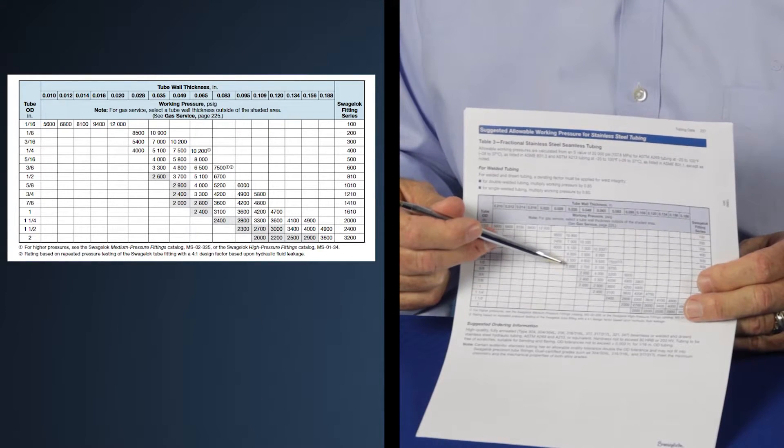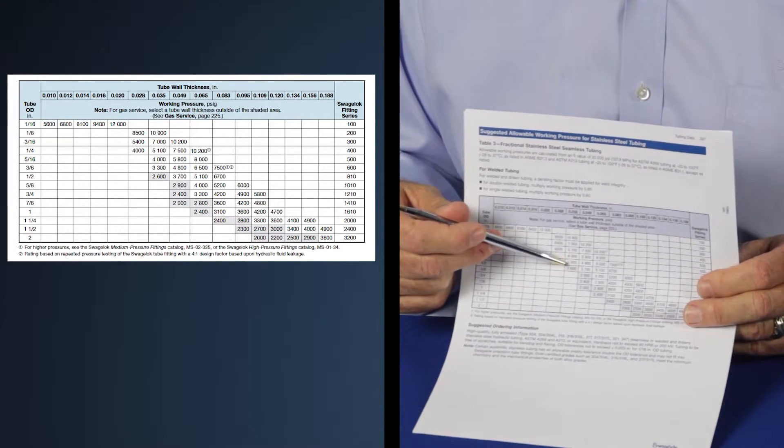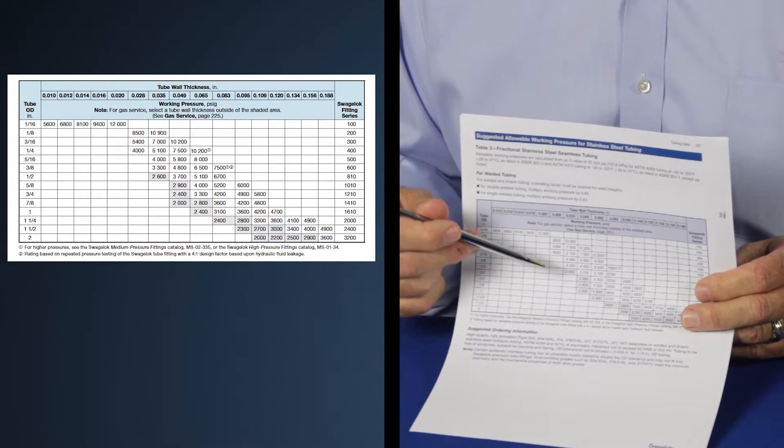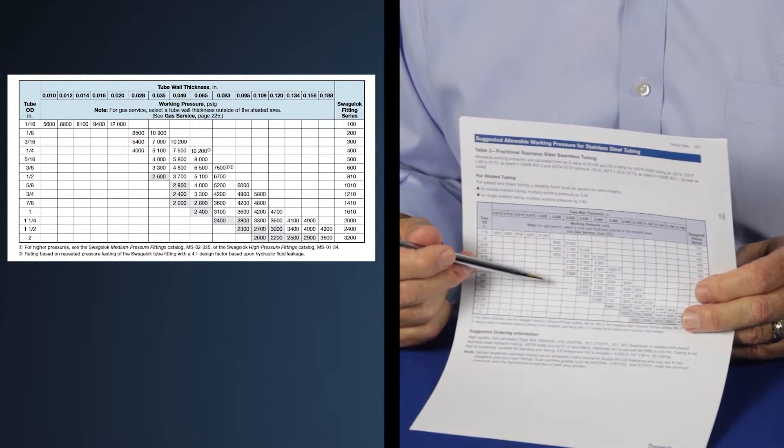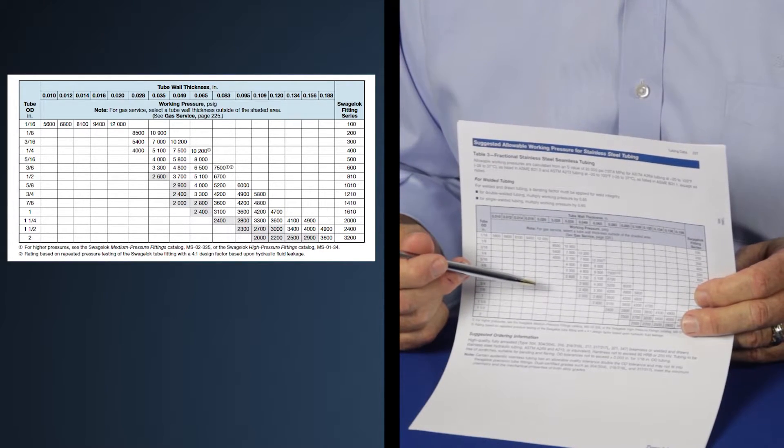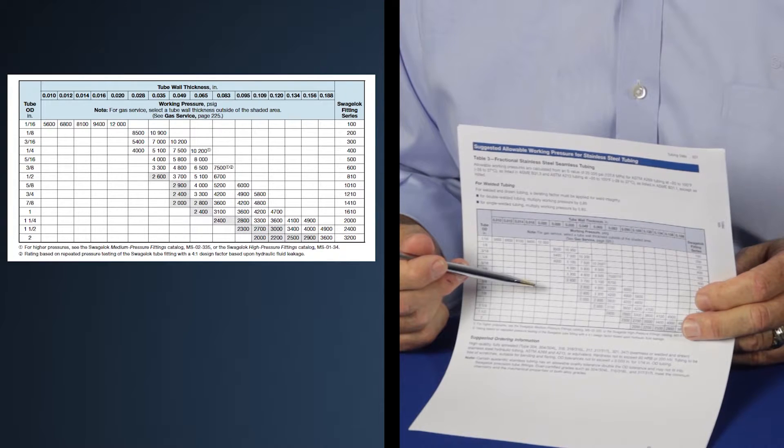The very first working pressure you come to is 2,600 PSI working pressure at 035 wall, but that rating is grayed out. This is telling you that is the allowable working pressure for hydraulic applications.